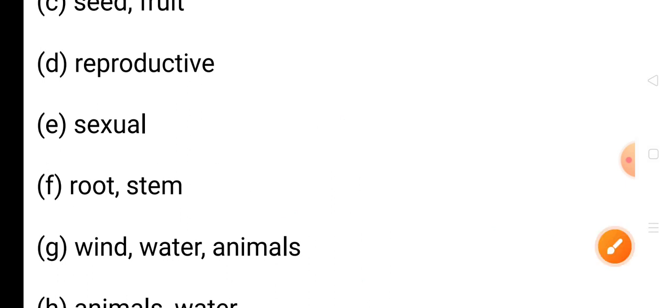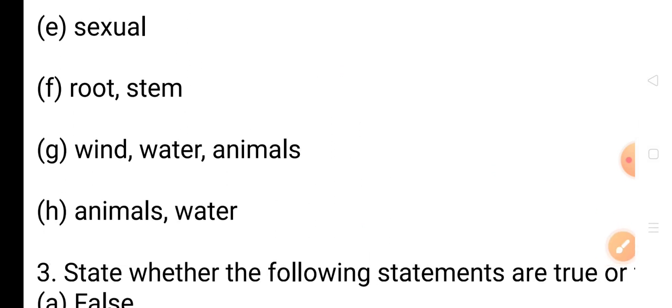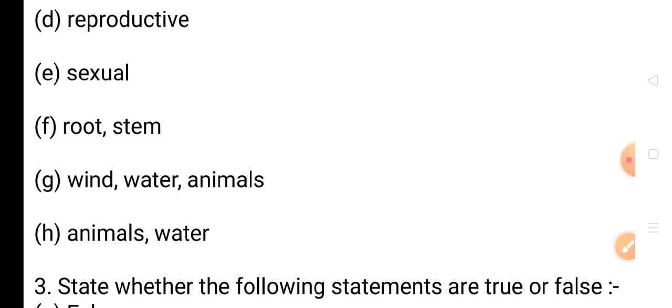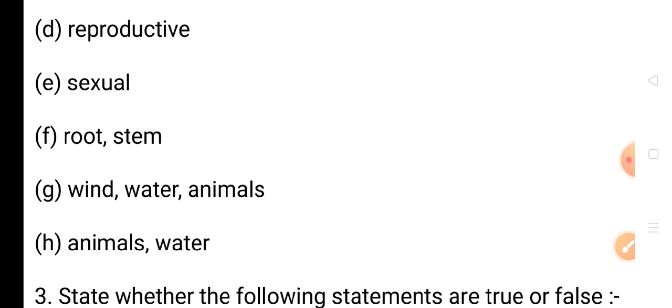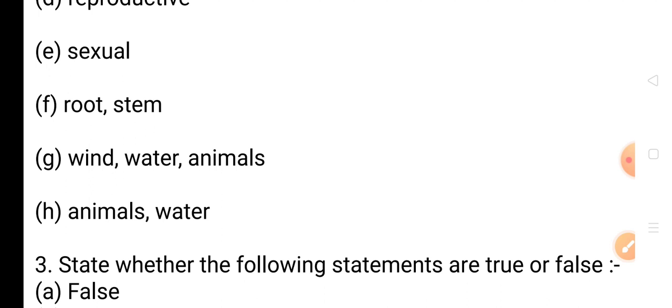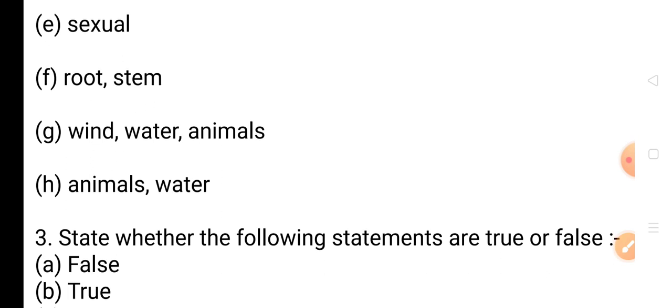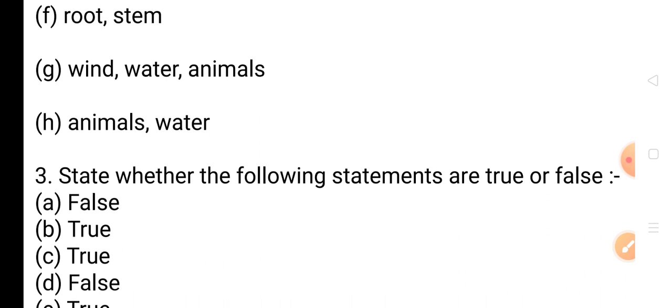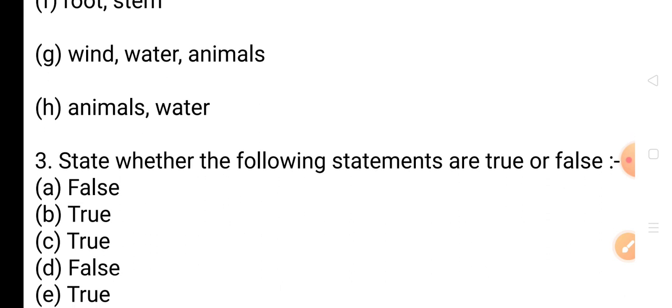We have completed Fill in the Blanks. Now we are going to solve True or False statements. Question 1: The fruits of coconut plants are dispersed by wind — this is False. Question 2: The seeds of drumstick and maple are hairy and dispersed by wind — this is True.